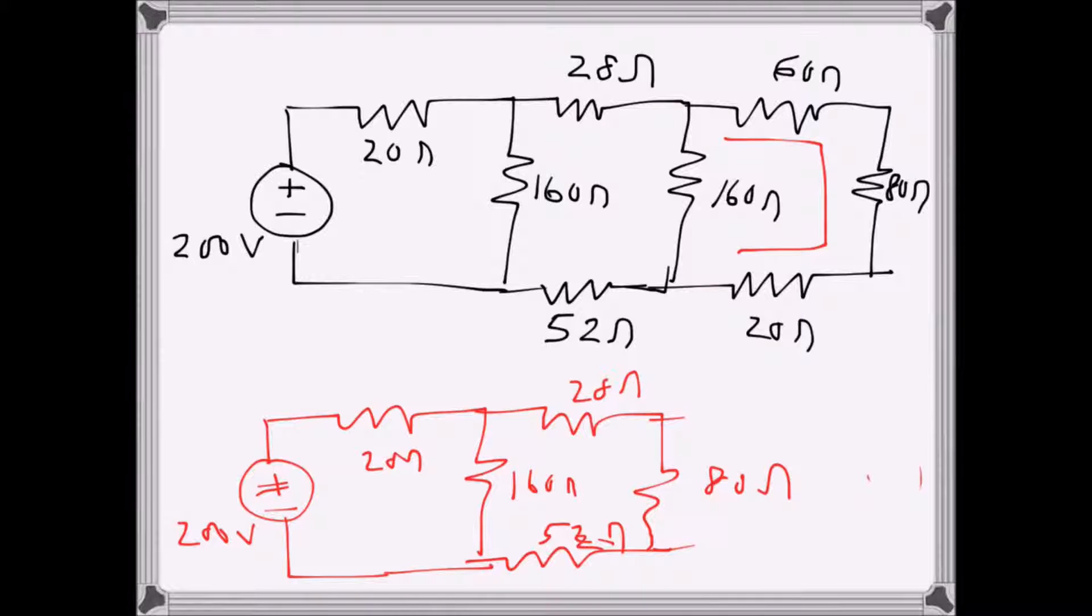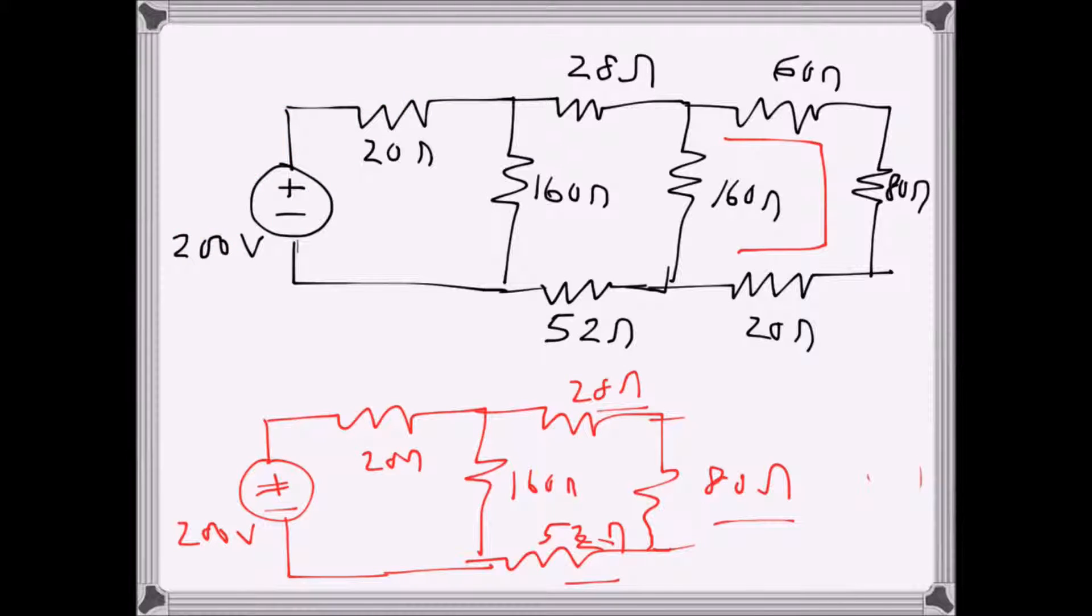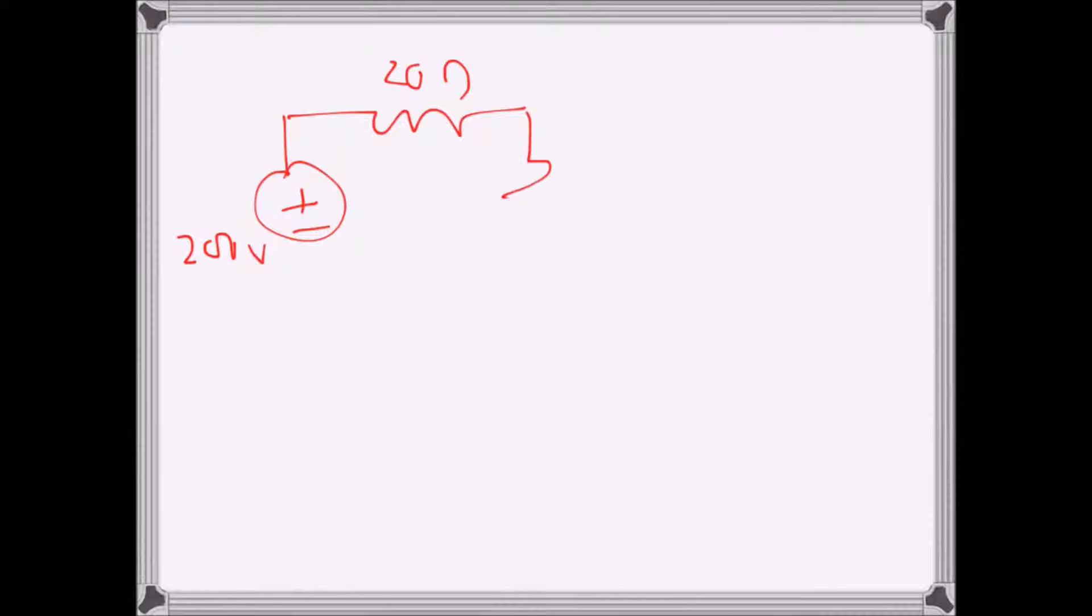Now I have 52 ohms, 28 ohms, and 80 ohms. When these three are added, this is again 200 volts, 20 ohms there, and we have 160 there, 160 there, 160 ohms there.